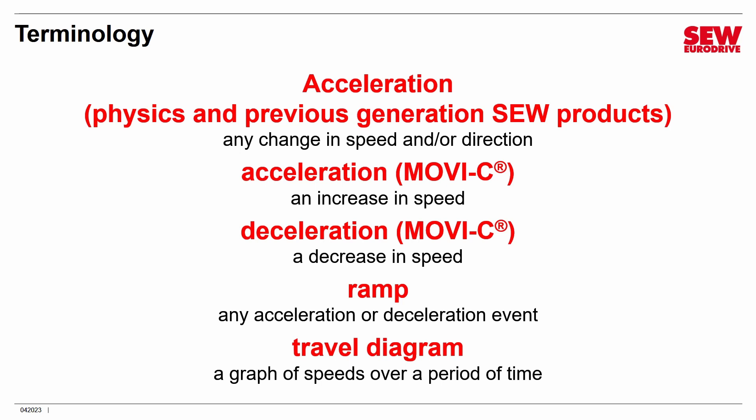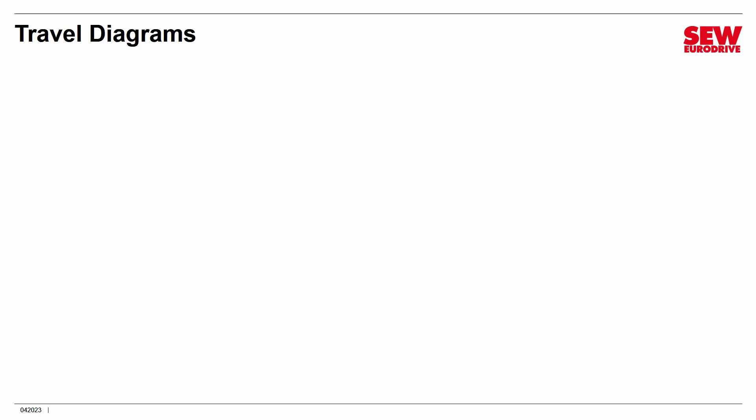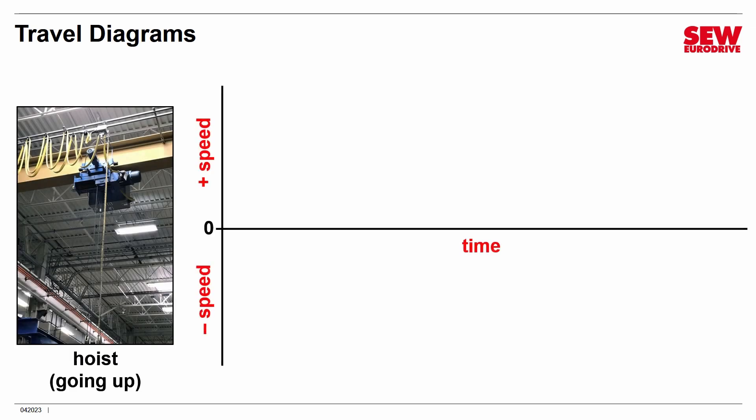Another term SEW EuroDrive uses a lot is the travel diagram — a graph of speeds over a period of time, not position. Let's take a very simple example: a hoist that can go up and down. Starting from the floor where it's not moving at all, it will accelerate, move up to the top, and stop, then do the reverse and come down. We'll start with just the hoist going up.